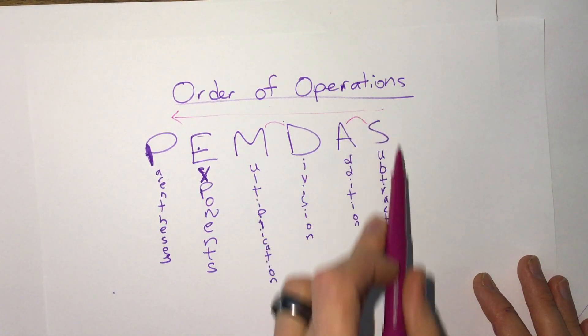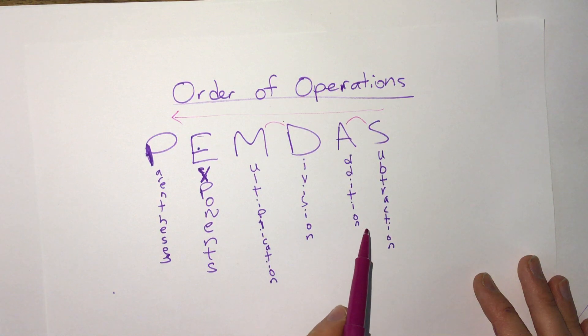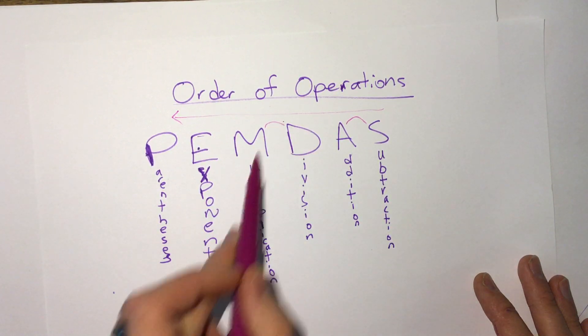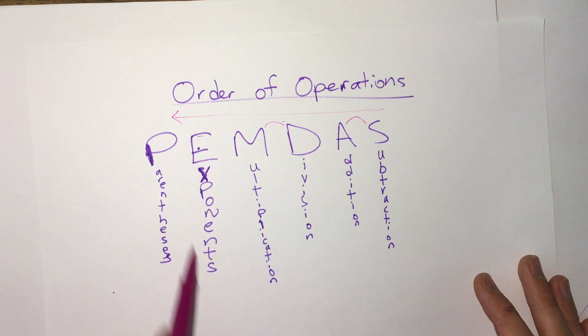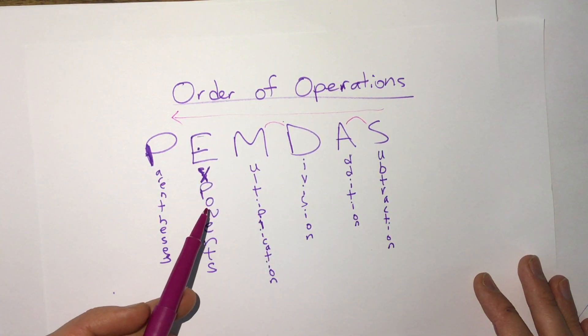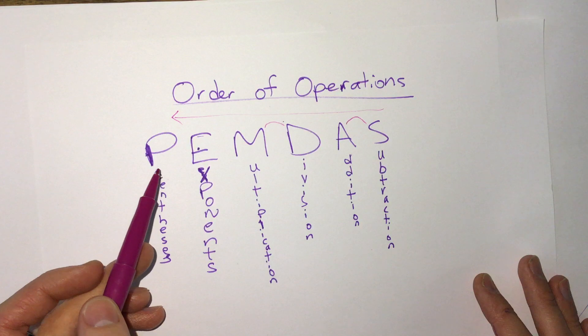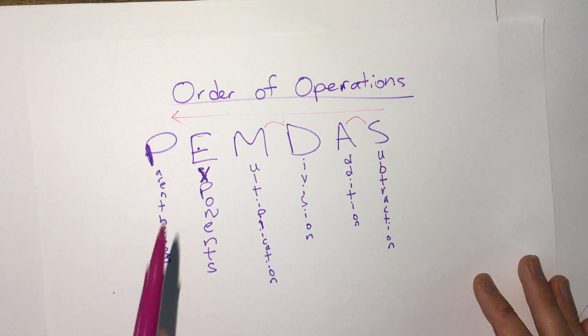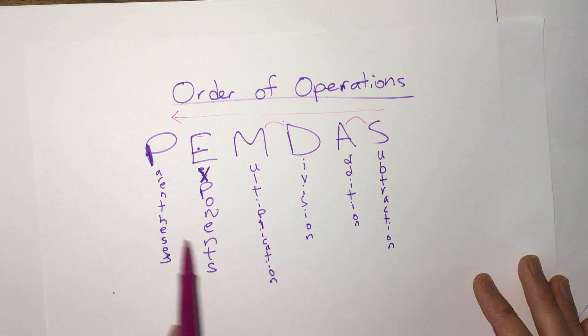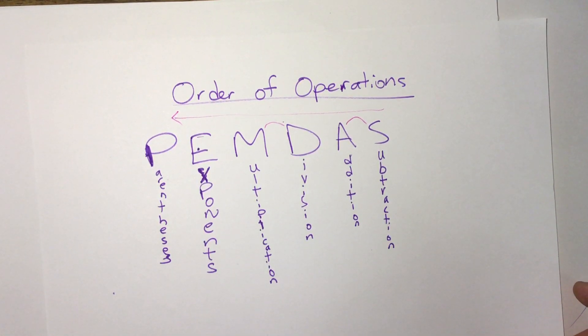When we move things, we first start with moving anything that's addition and subtraction, then we move anything that's multiplication and division, and last we move anything with exponents and parentheses. Hopefully we've simplified so there aren't any that would come very last. So we want to think opposite order of our order of operations as we do these.